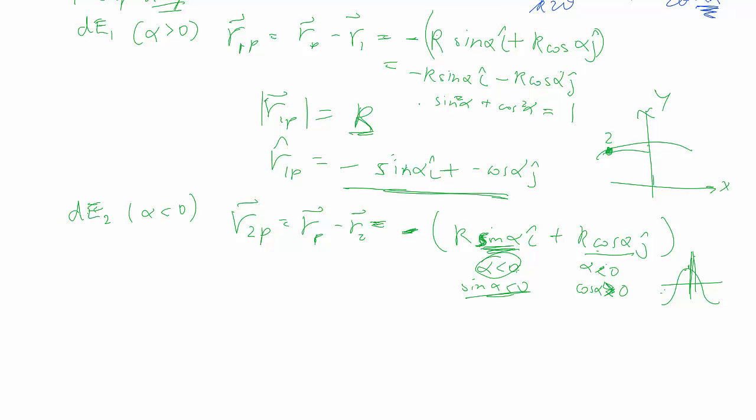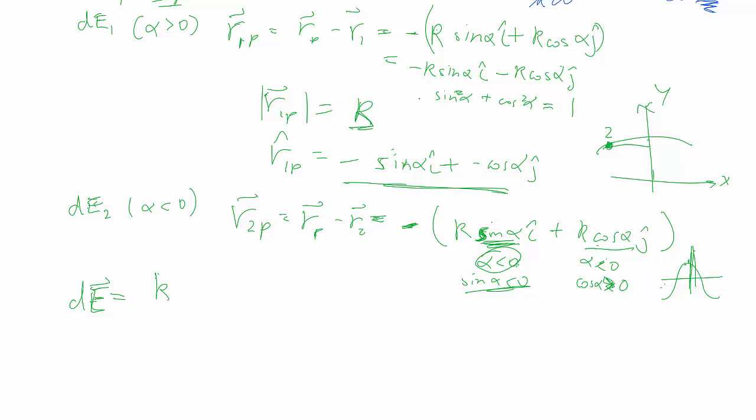Which is great because that tells us that for both alpha greater than 0 and alpha less than 0, we have the exact same expression. So then we can just treat everything as a simple same dq.